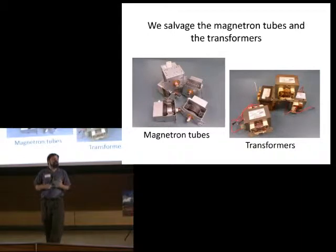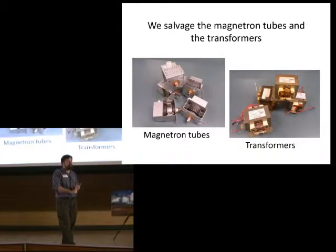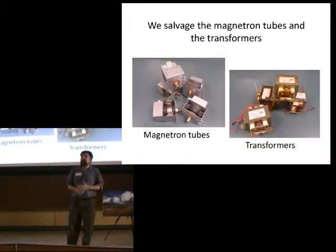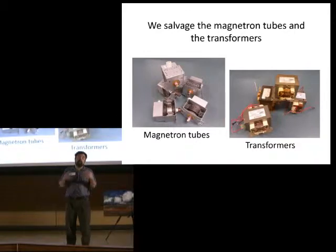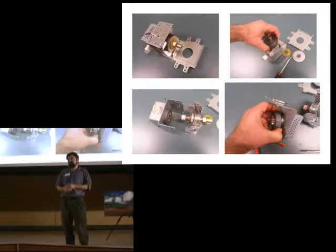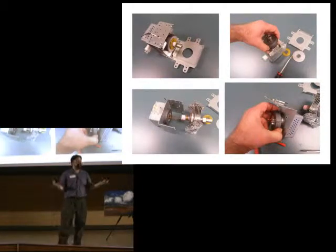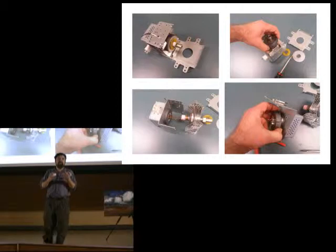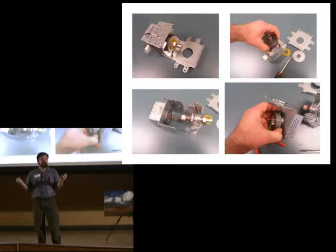We want to get out two things: the magnetron tubes, which are old vacuum tubes actually, and those will provide our magnets. And we want to get out the transformers. The magnets come out of the magnetron tubes pretty easy. Transformers are a little harder. You pry off the tabs, pull down the front, and pull out the first magnet.